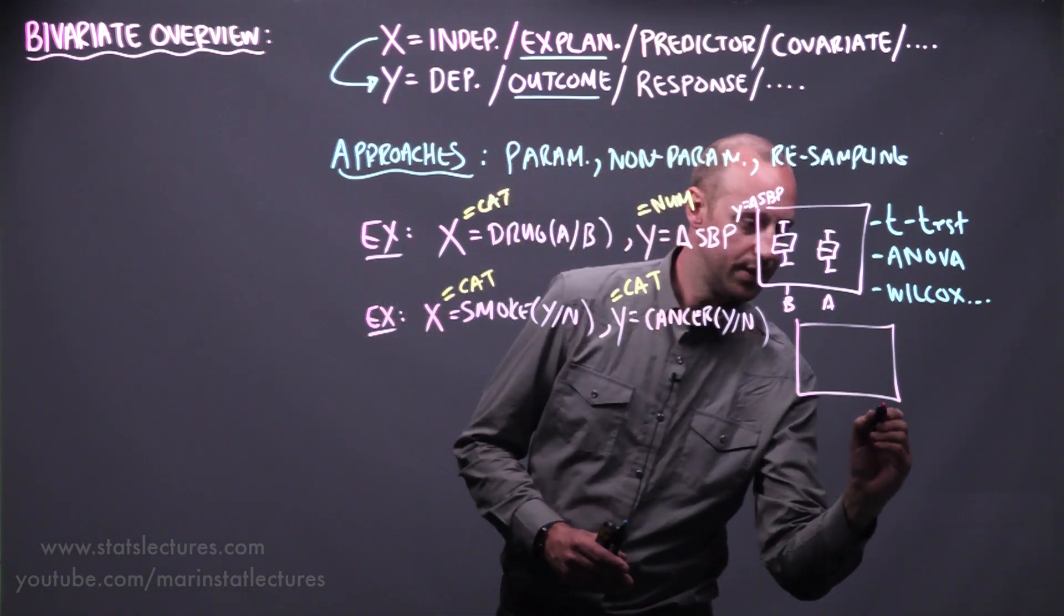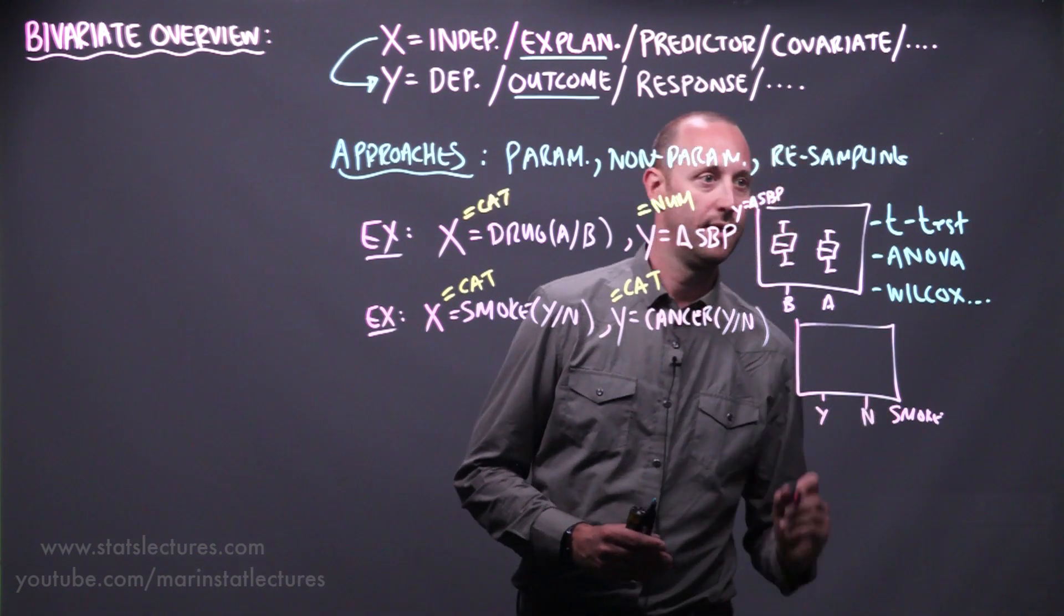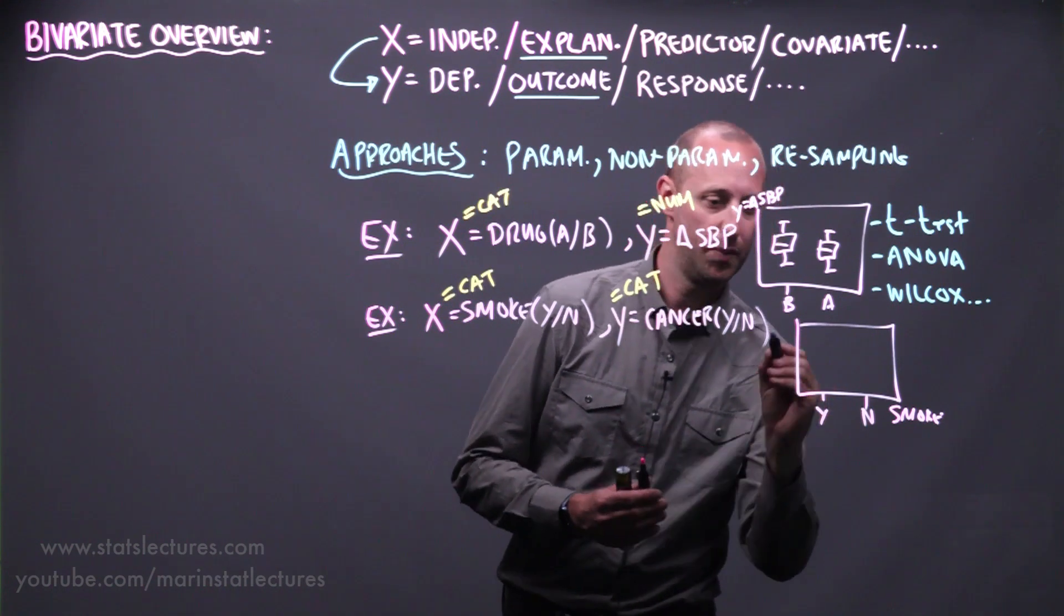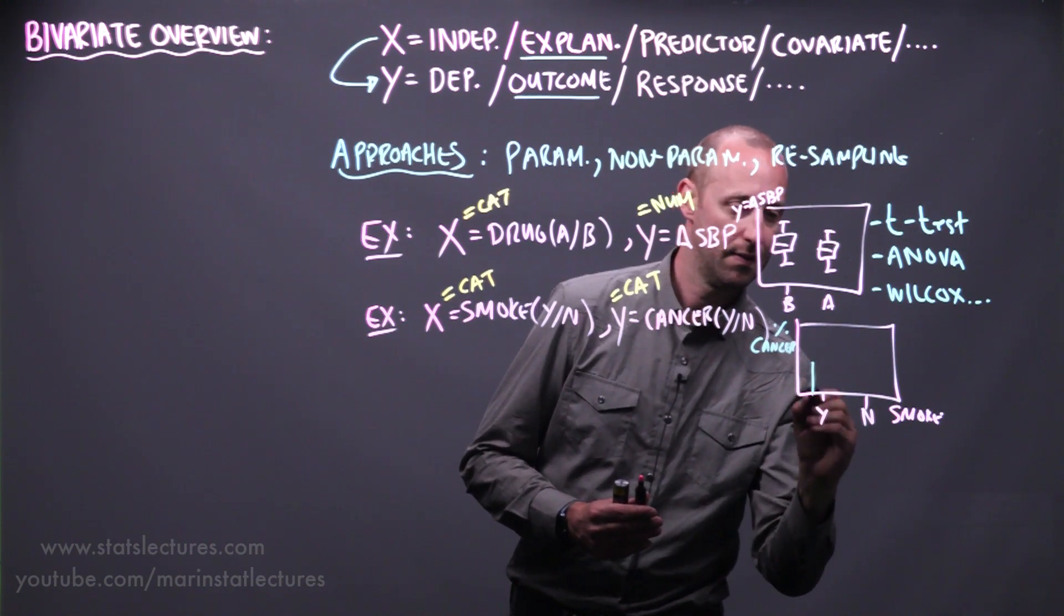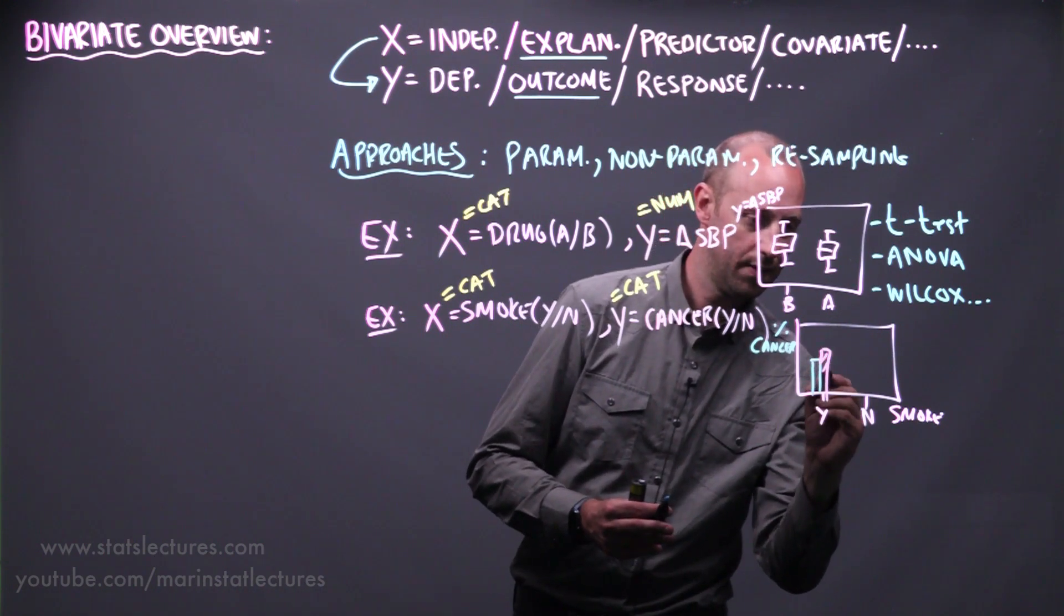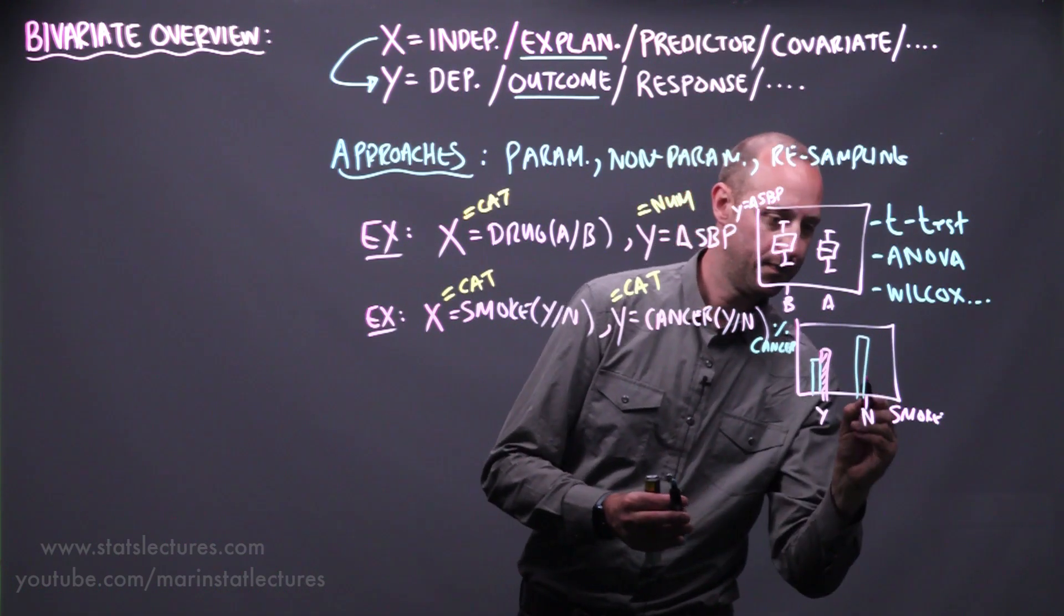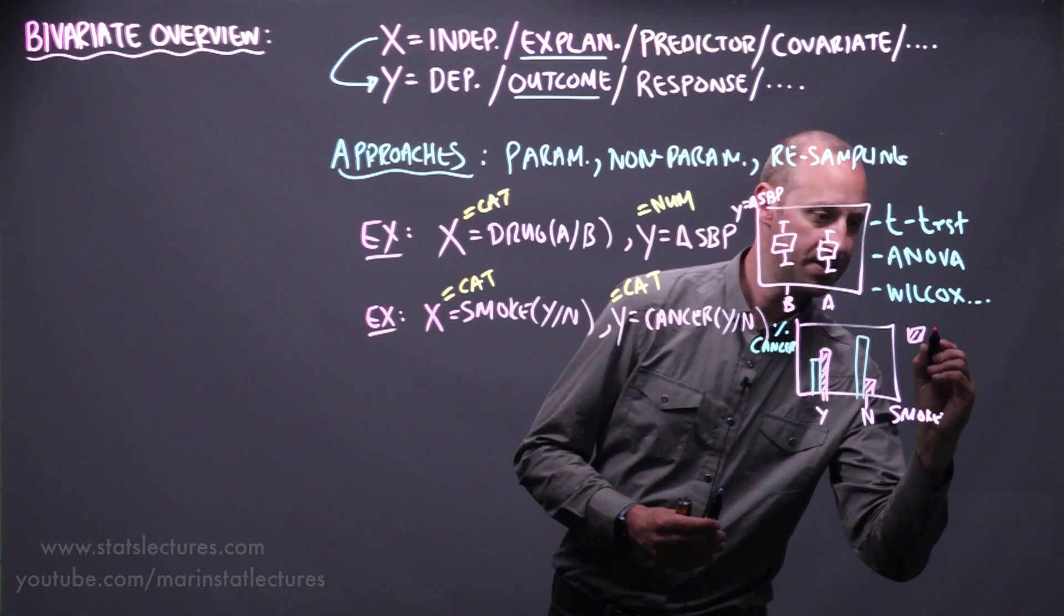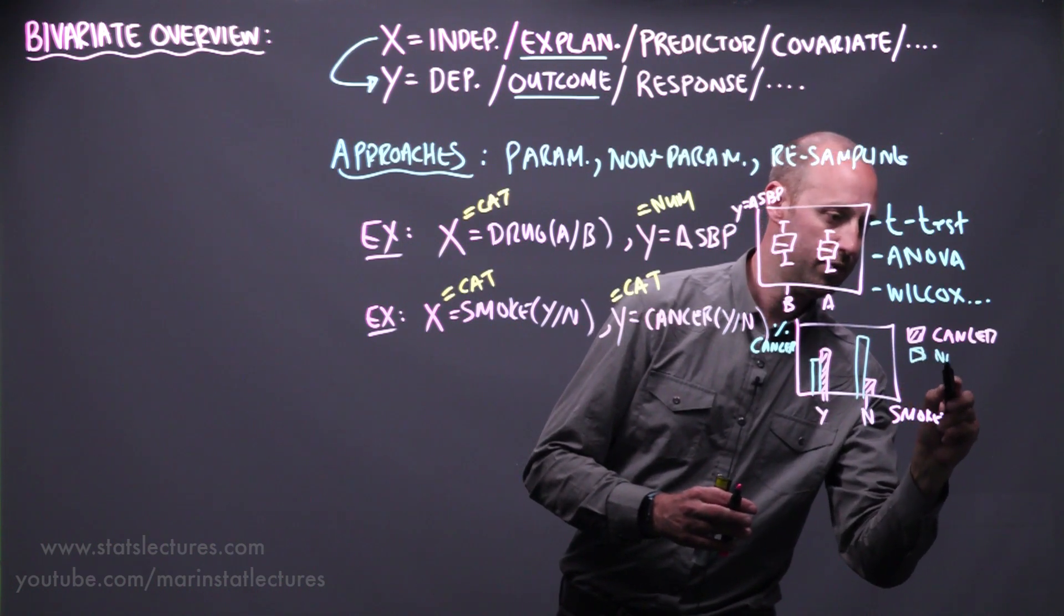So to analyze the relationship between these two visually, we can think of making side-by-side bar plots. So we could look at does someone smoke, our x variable, yes or no, and do they develop lung cancer, yes or no. And here we'll put the percentage with cancer or the proportion with cancer, and here's one group and the other, where these pink ones here are the cancer and the blue is no cancer.